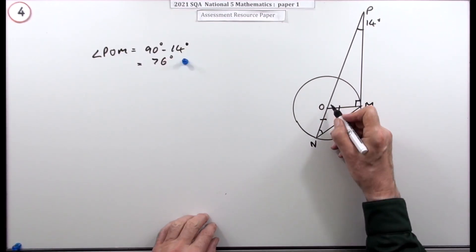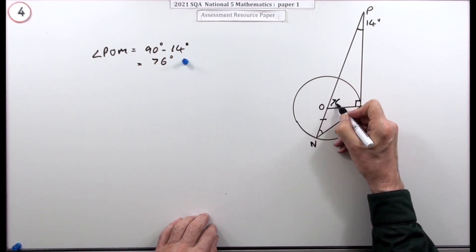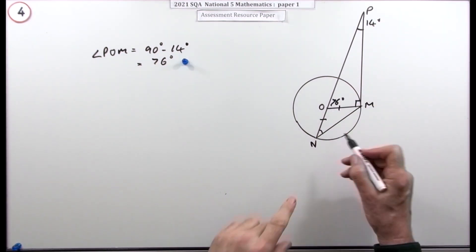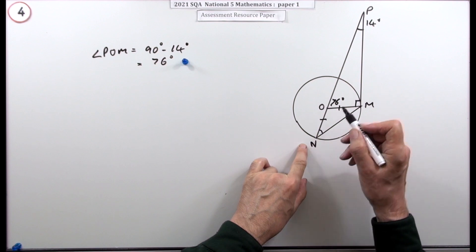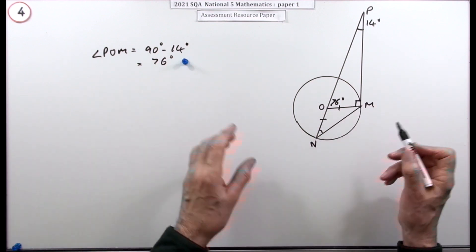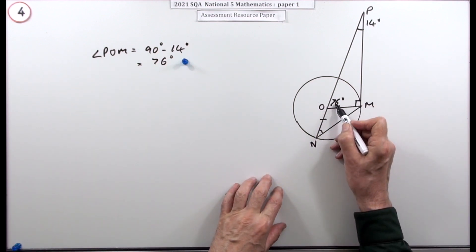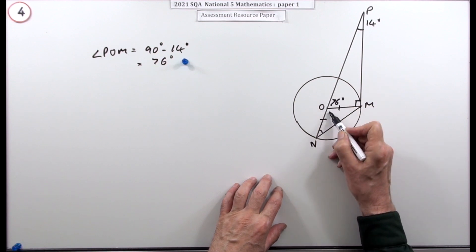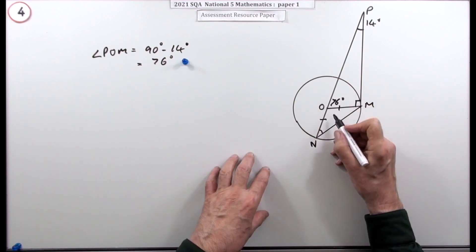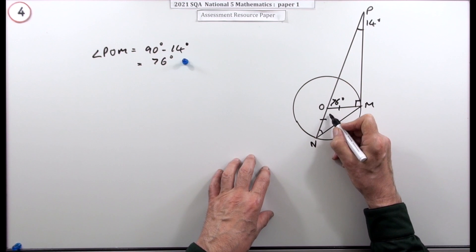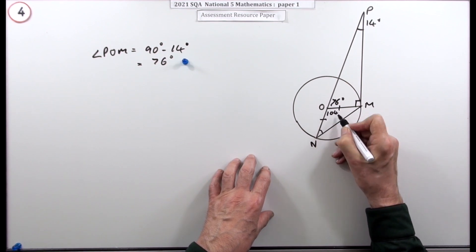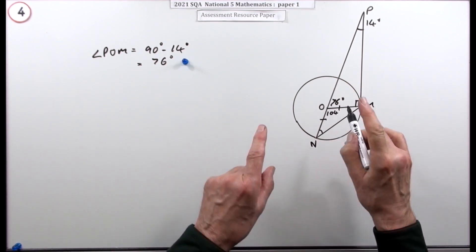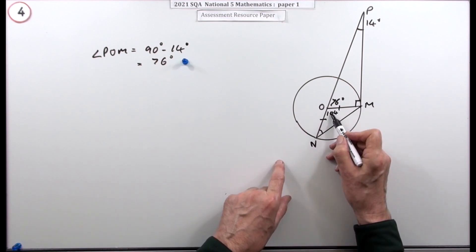Now to get to M, you're going to go through a couple of steps which will in fact undo each other. From 76, it's a straight line supplement—that's going to be 104. But then what you're going to do next is say, I've got 104.